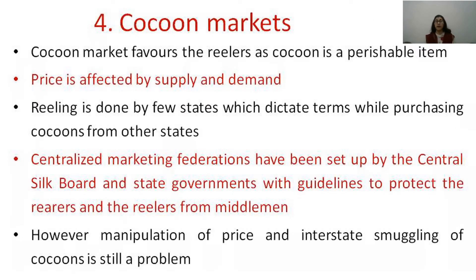The cocoon market favors reelers because cocoon is a perishable item and farmers cannot hold it for long, forcing them to sell. This gives reelers a monopoly to fix prices. Price is also affected by supply and demand — if supply is more, price goes down. While silkworm rearing is practiced across almost all states, reeling is done in only a few states, allowing reeling centers to dictate purchase prices. Though centralized marketing federations by the Central Silk Board and state governments exist to protect rearers, manipulation of prices and interstate smuggling of cocoons remain significant problems.